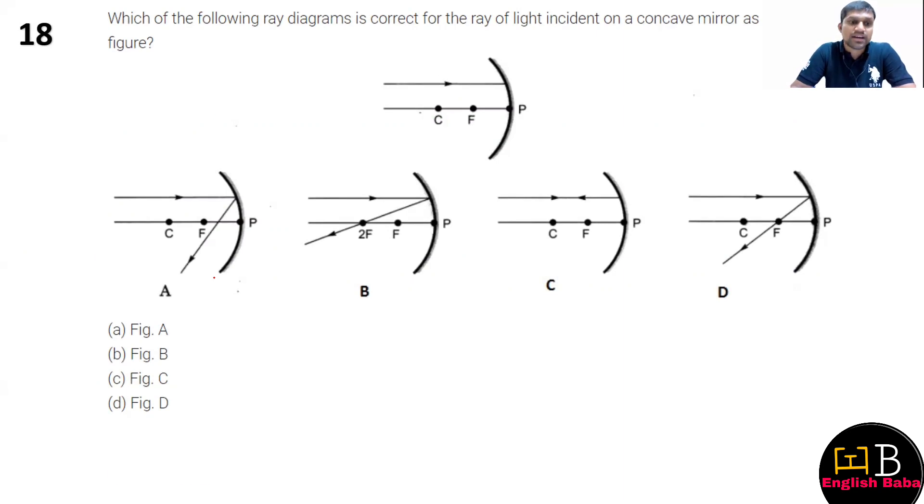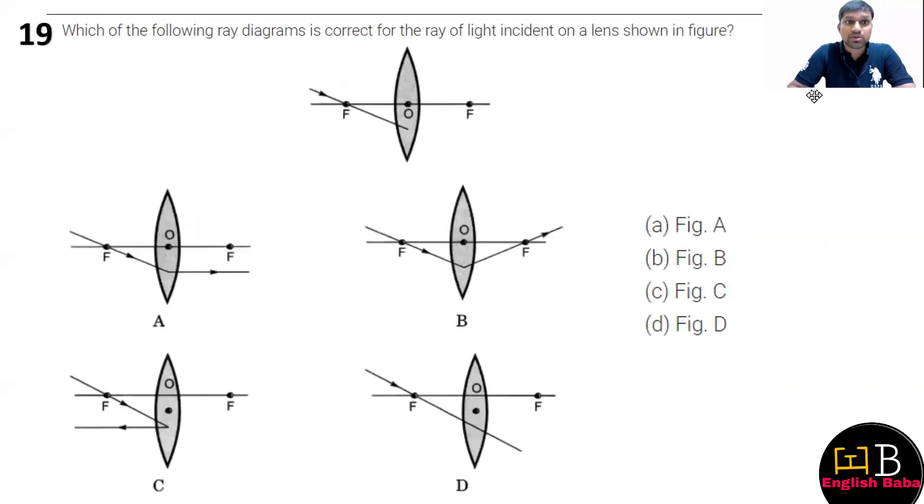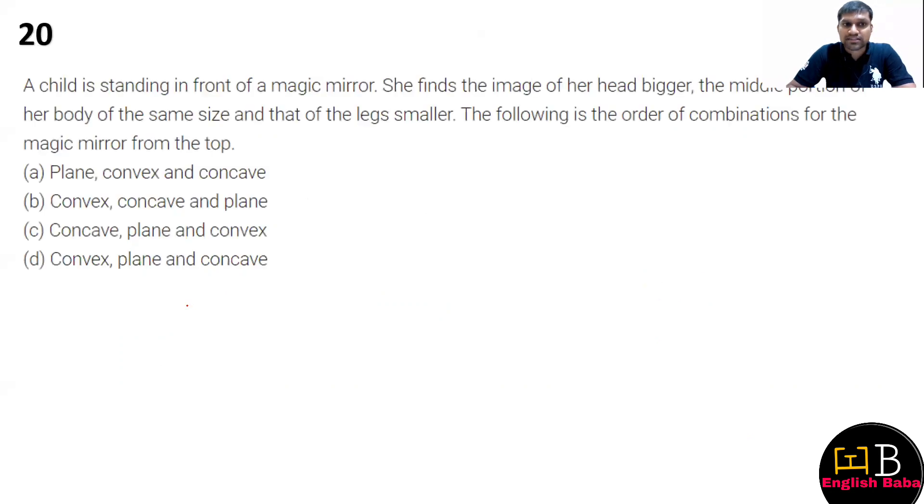Question number eighteen: which set of diagrams is correct? Here option number D is correct. Moving on to the next question: which one of the following diagrams is correct for the ray of incidence shown here? You have to identify the lens. Here the correct diagram is option A. It goes through the focal point and then becomes parallel to the principle axis.